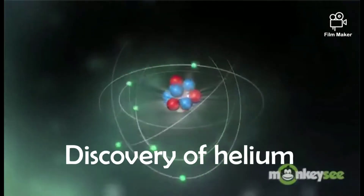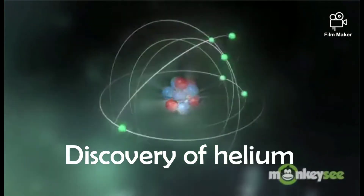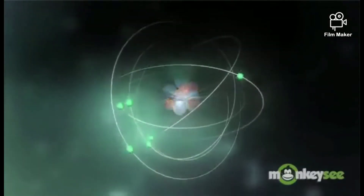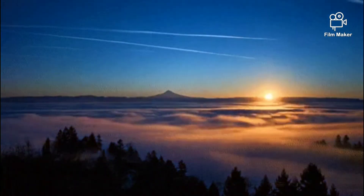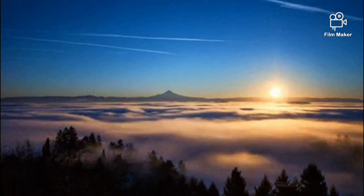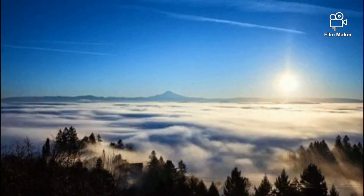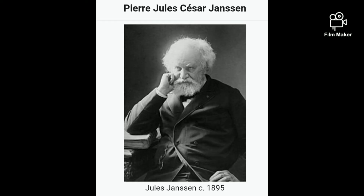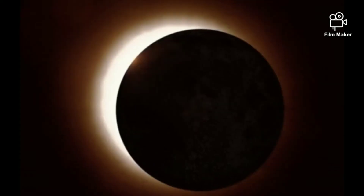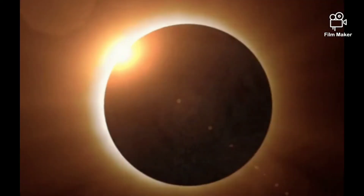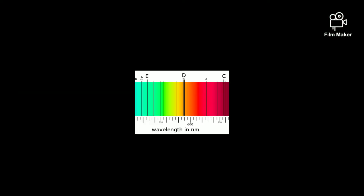Discovery of helium. Helium was initially discovered on the Sun; later it was found on Earth. The discovery of helium was firstly made by Pierre J. C. Janssen in 1868 while he was observing a solar eclipse. He noticed the yellow line in the Sun's spectrum.